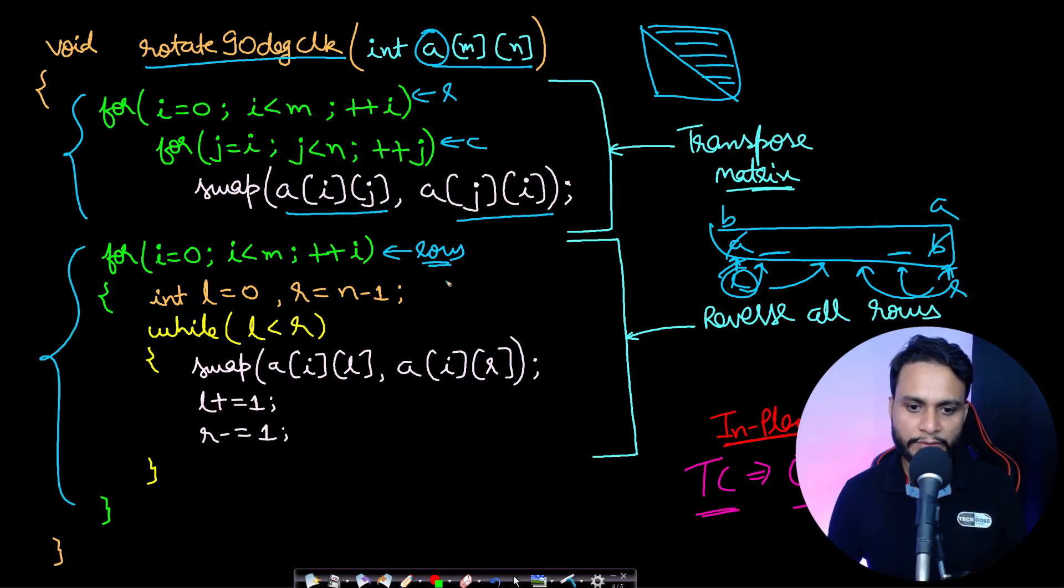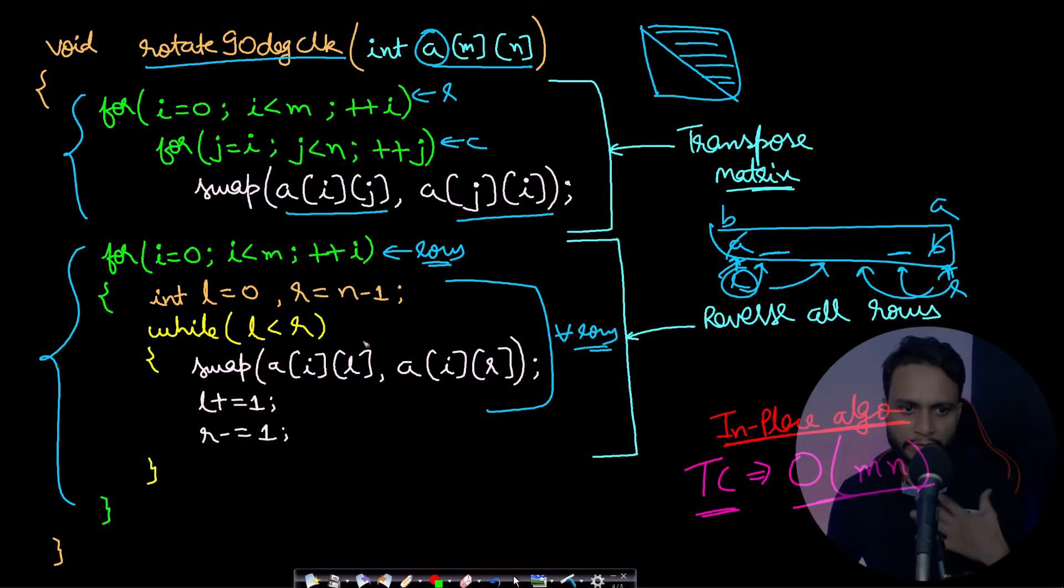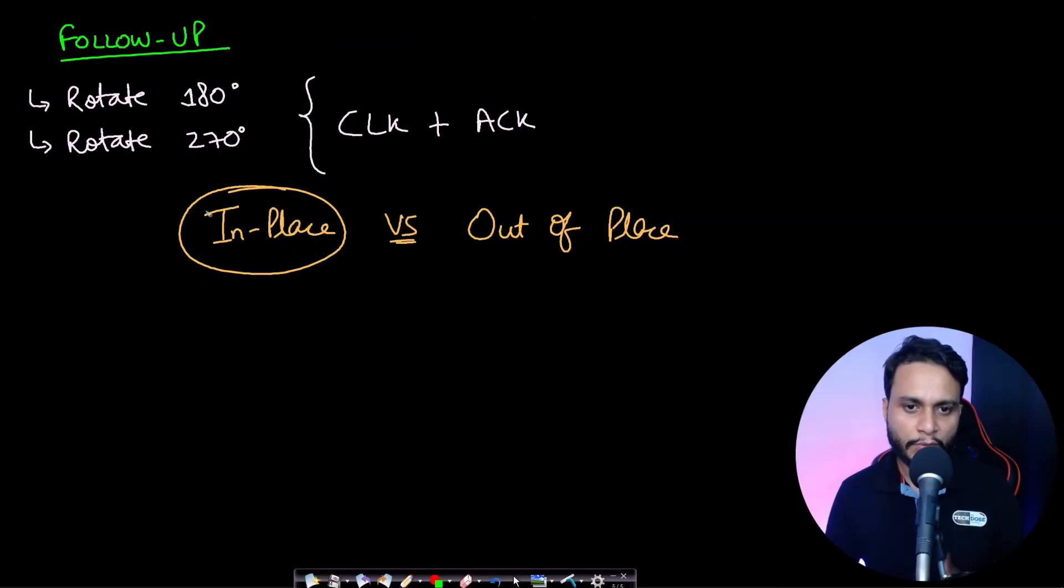So this is that part, reversing all the rows. This is for each row, for all the rows one by one. So this is the entire code. I think this is very easy. There are other techniques to solve this problem, but this is one of the easiest, and you can use this technique to solve any kind of follow-up problems.